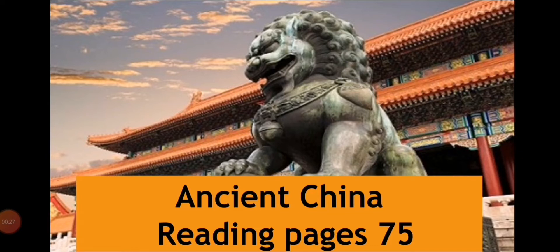As you already know, we have started the topic of Ancient China and we are reading the very old history of China. In the previous reading we covered up to page 74, where we discussed in detail about the first emperor of China, Qin Shi Huang, and then we discussed the Terracotta Army — who made it and what was the perspective behind making it.